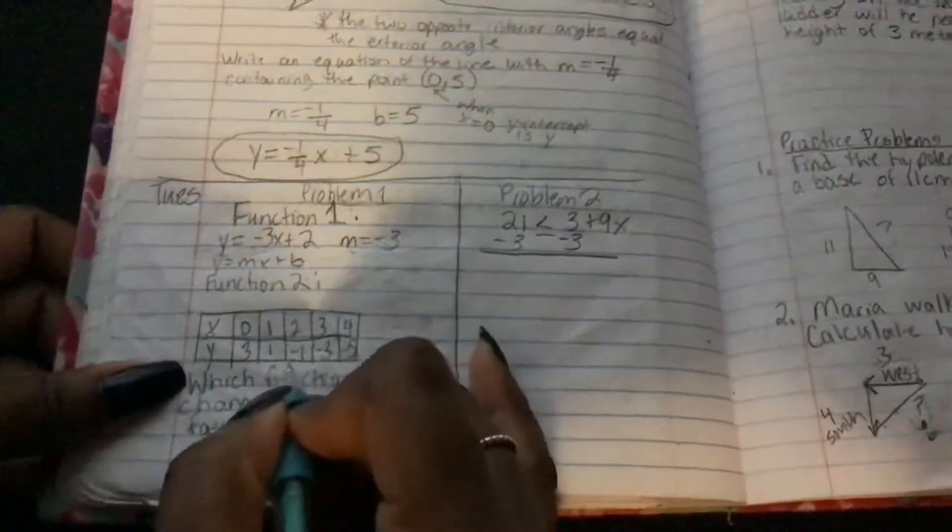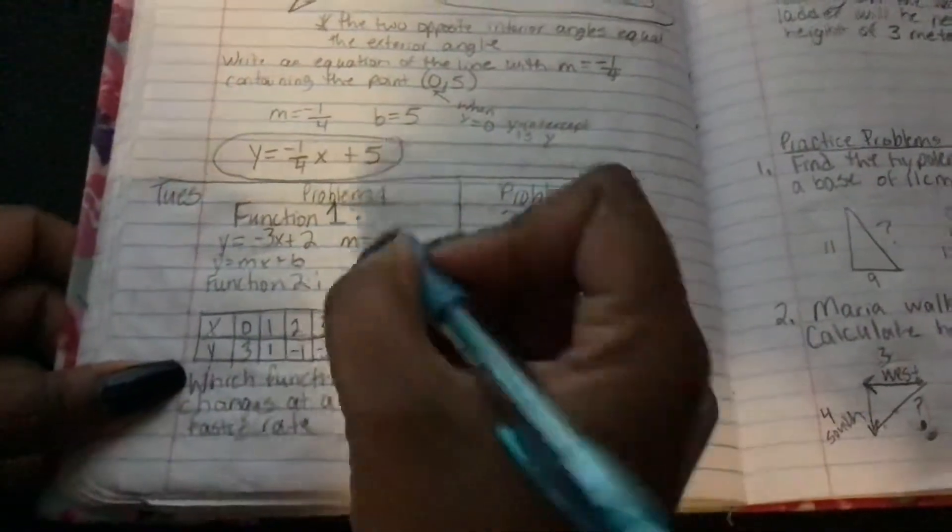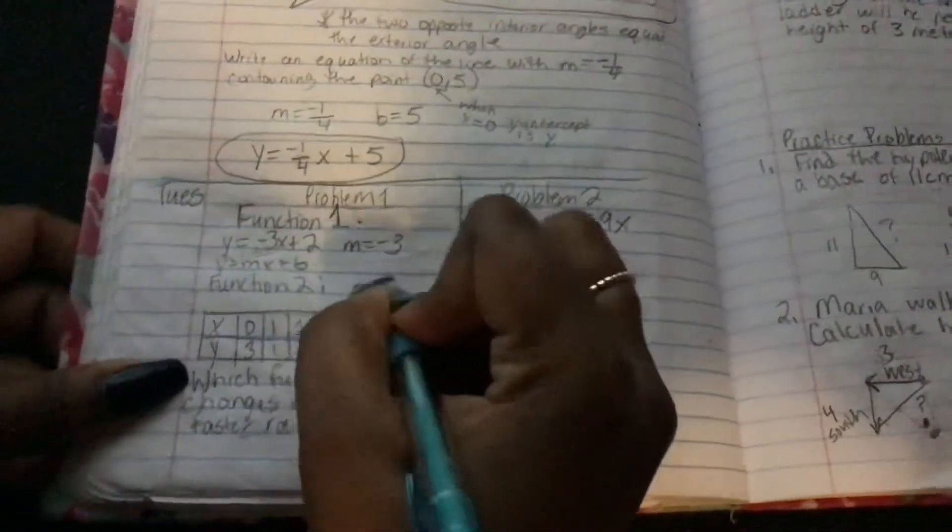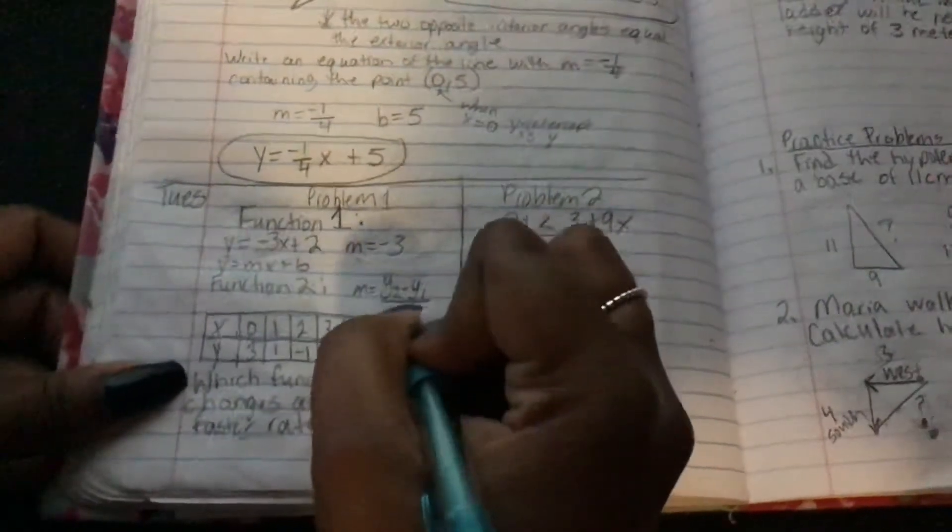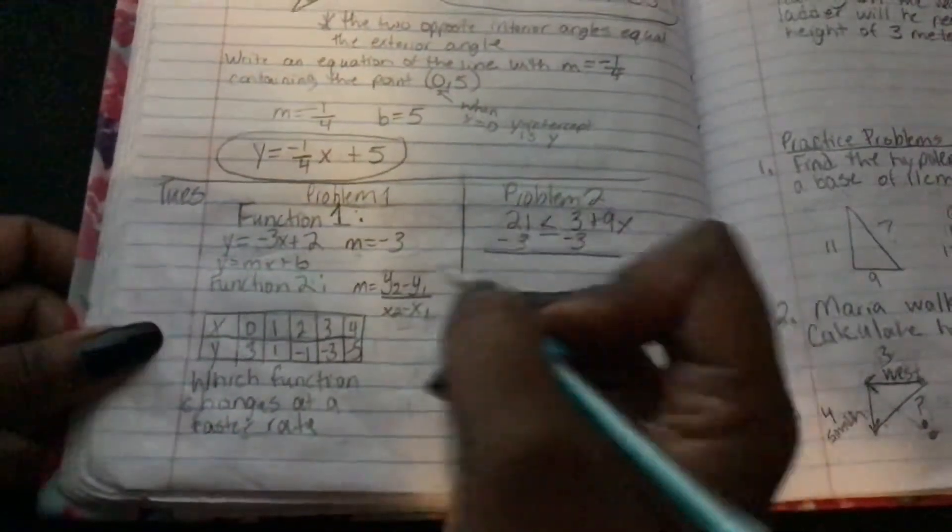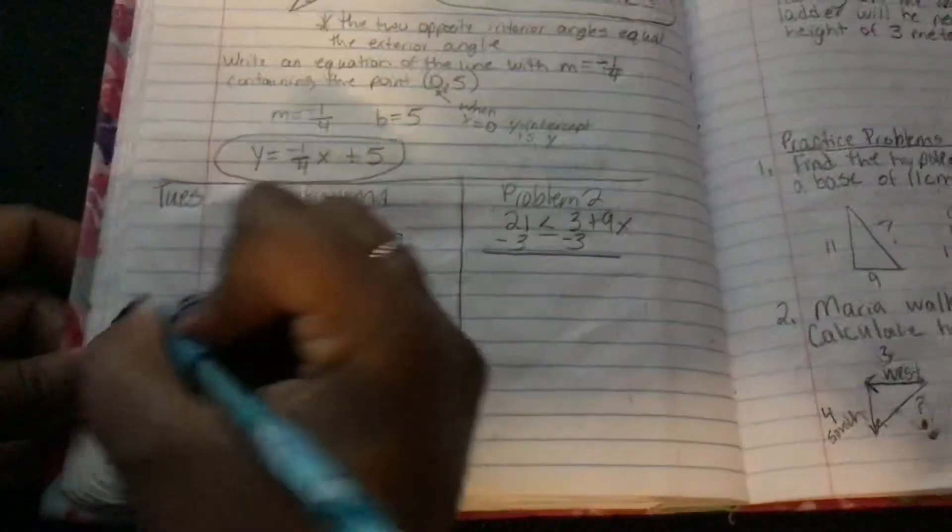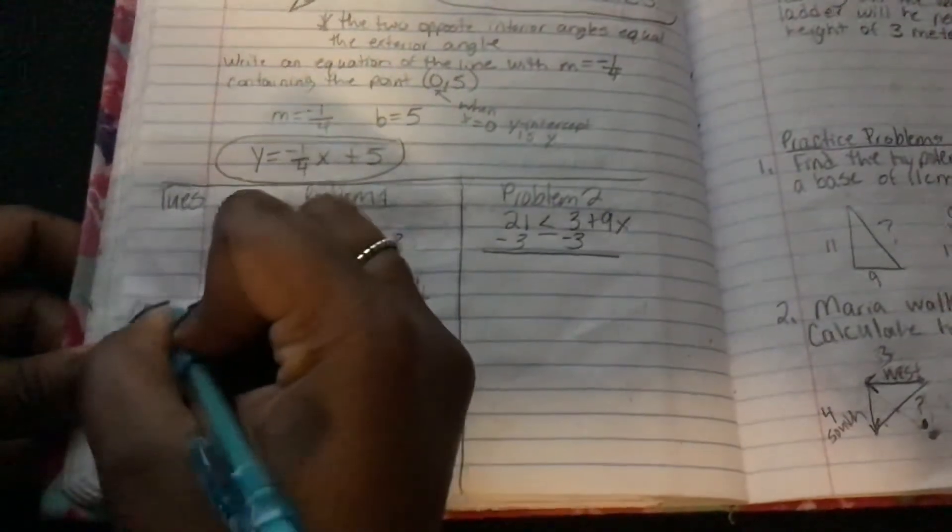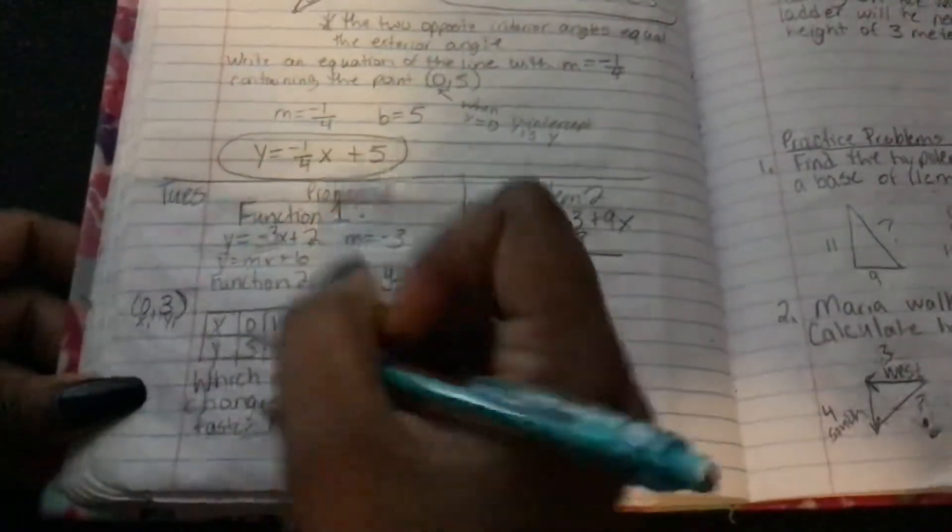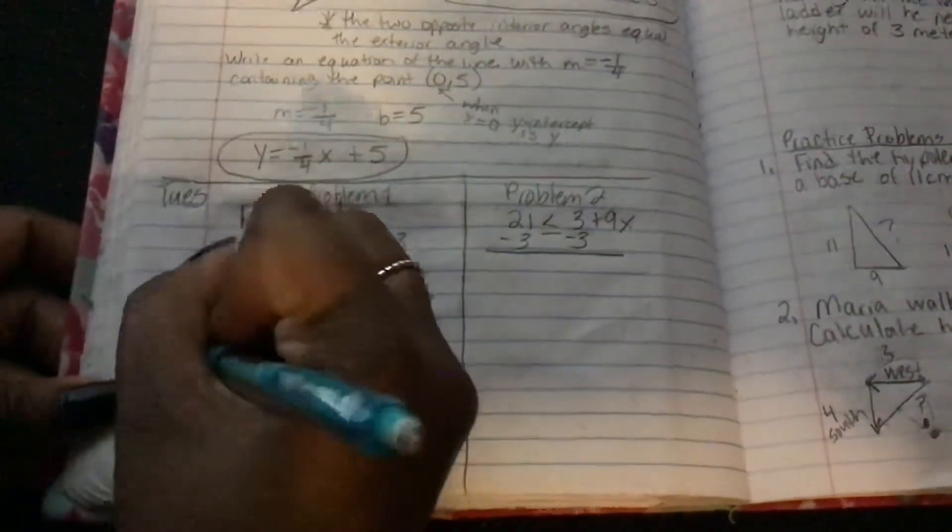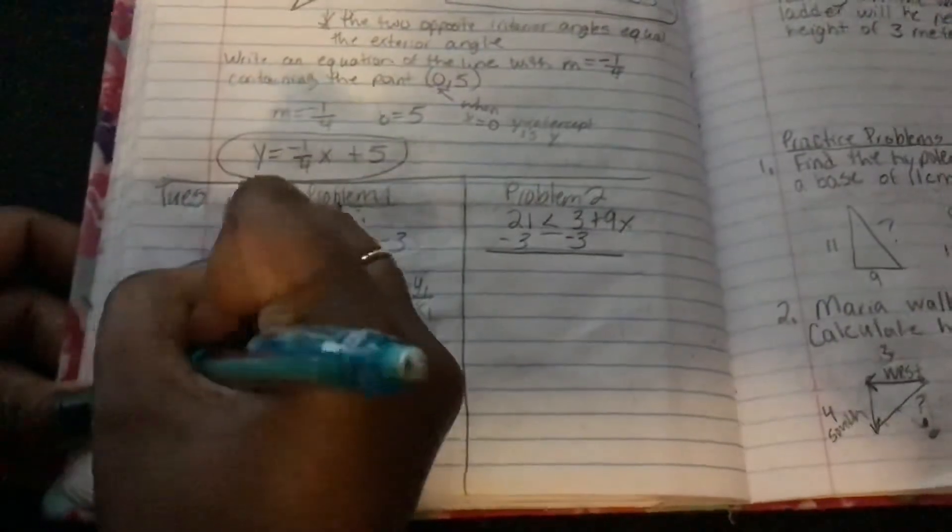So here, this function, we're going to find the slope or rate of change by using y2 minus y1 over x2 minus x1. The two points that we're going to use from the table, the first two, is going to be 0 and 3, where this is my first x, this is my first y, and the second point I'm going to use is 1 comma 1, x2, y2.